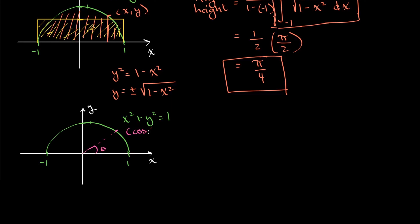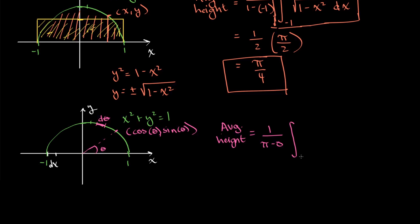This point is going to be represented by cosine of theta and sine of theta. We're finding an average height, but rather than taking little differentials of x as in our last example, here we're going to be taking little differentials of arc length. Theta ranges from 0 to π over the semicircle. So we have 1 over π minus 0, times our definite integral from 0 to π. The height — the y coordinate — is sine of theta, so we integrate sine of theta d theta.